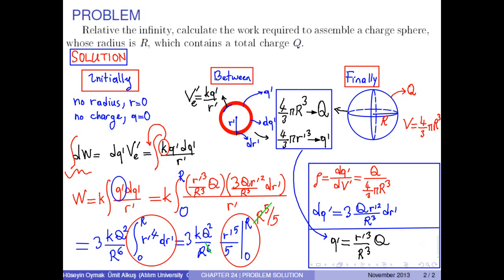As a result, we find the work required to assemble the charge sphere, whose radius is R, which contains the total charge Q, relative to infinity, as 3/5 times k times Q squared over capital R.